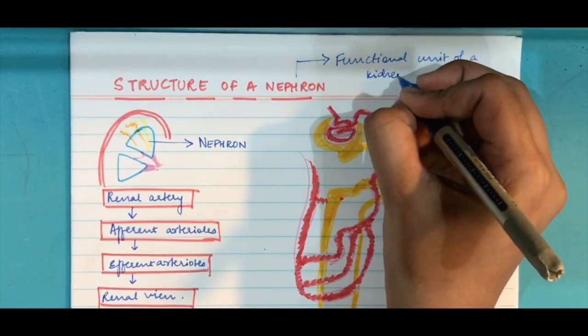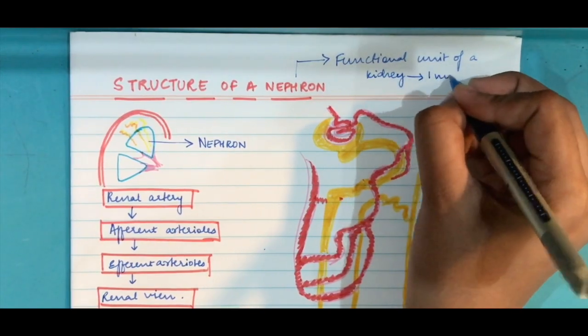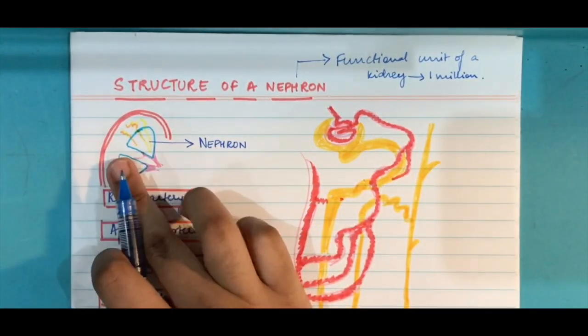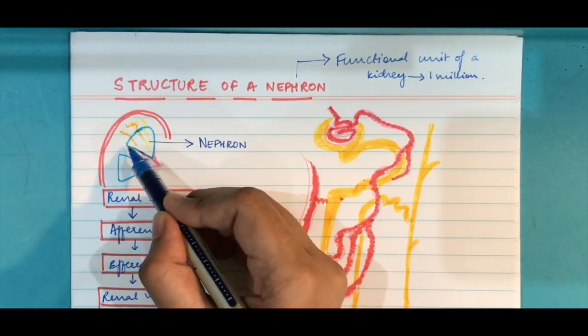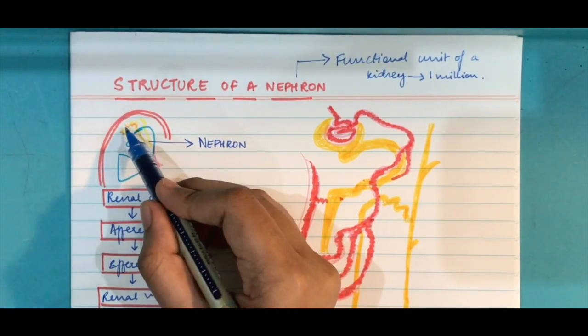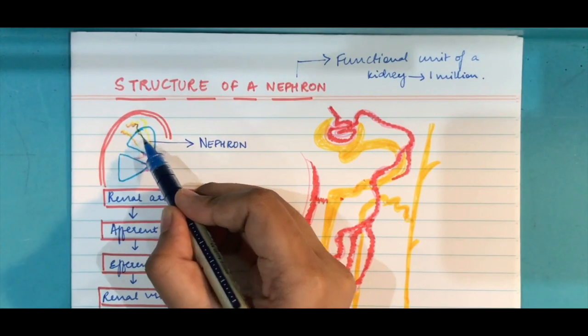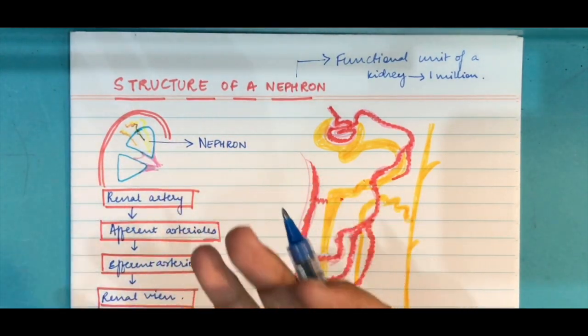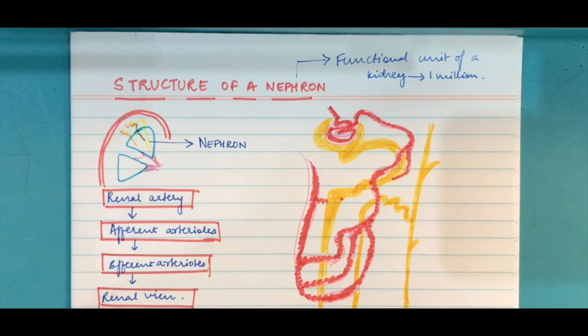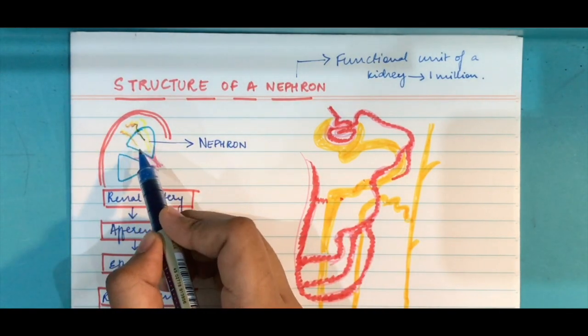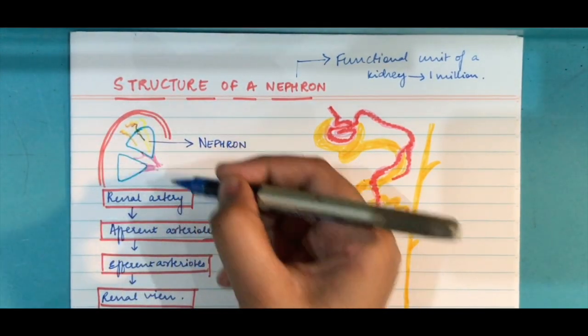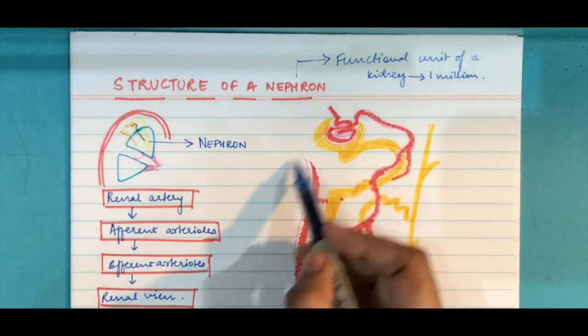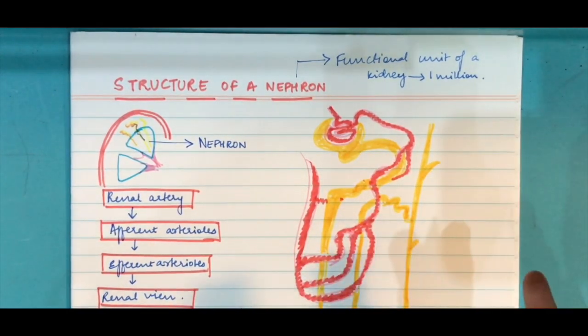Each kidney consists of one million nephrons. Now I have a cross-section of the human kidney here. These are medullary pyramids and this is the cortex region. You see this small line here, that's actually pretty big for a nephron. Nephrons are almost invisible to the naked eye, but this is how a nephron basically is arranged in a kidney. There are millions of it in the entire kidney.